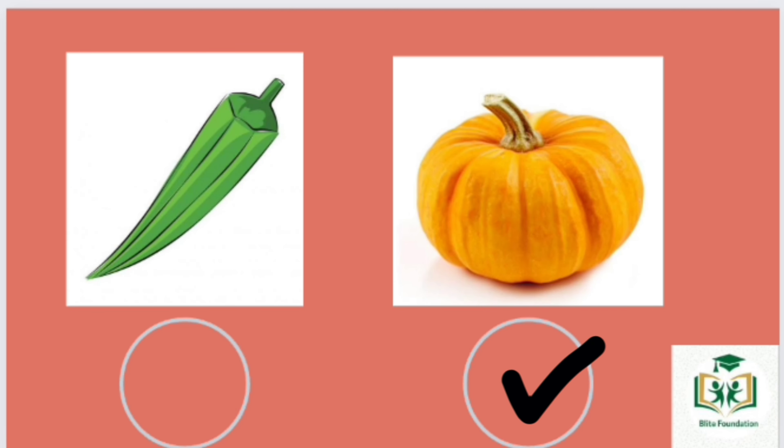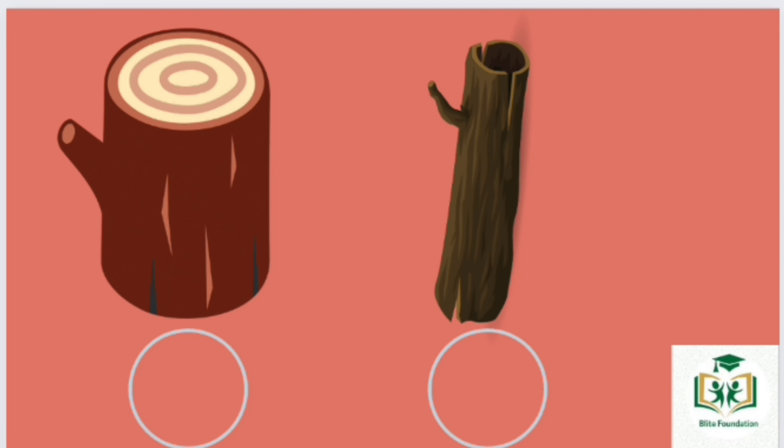Pumpkin is the thicker one. Lady finger is the thinner one. Left one is the thicker one. Right one is the thinner one.